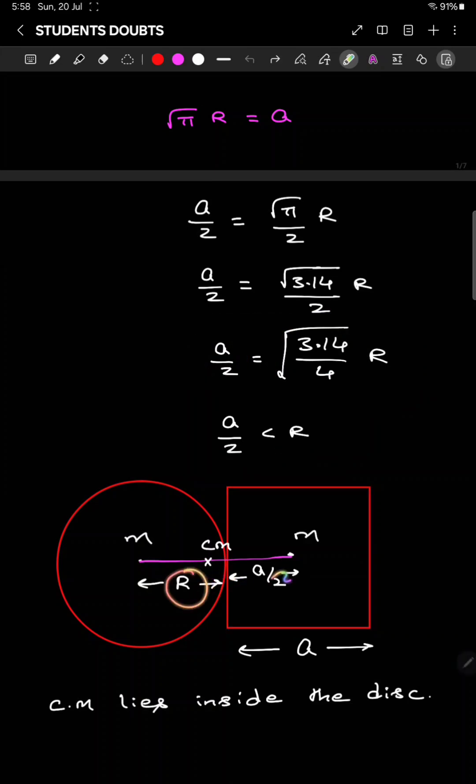If R equal to a by 2 and here given mass is same already, then center of mass will be lies exactly at center. But here it was mentioned R was more. That means the center of this line will be inside the disc only. So center of mass lies inside the disc. Thank you.